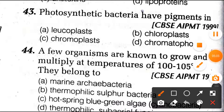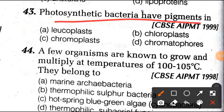Question number 43: photosynthetic bacteria have pigments in chromatophores. As discussed in the last video, the answer is chromatophores.